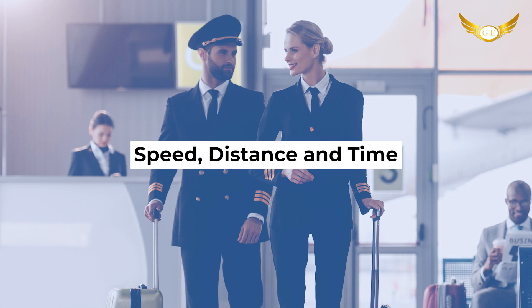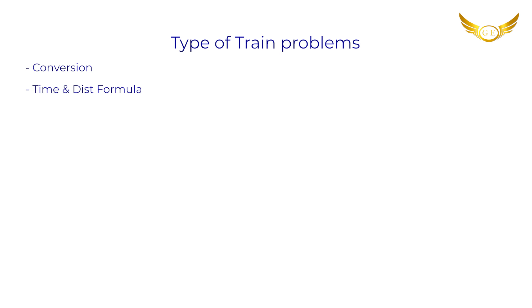Don't worry, I am here today to help you solve some of the questions. I am going to give you some examples of the kind of questions you can expect when you go for your written exam in the Cadet Pilot Program. For today's video, the questions we are going to be solving will be from the topic Speed, Distance and Time. In these train problems, you can expect four types of questions: conversion, time and distance formula, train and object questions, and theory of relativity.